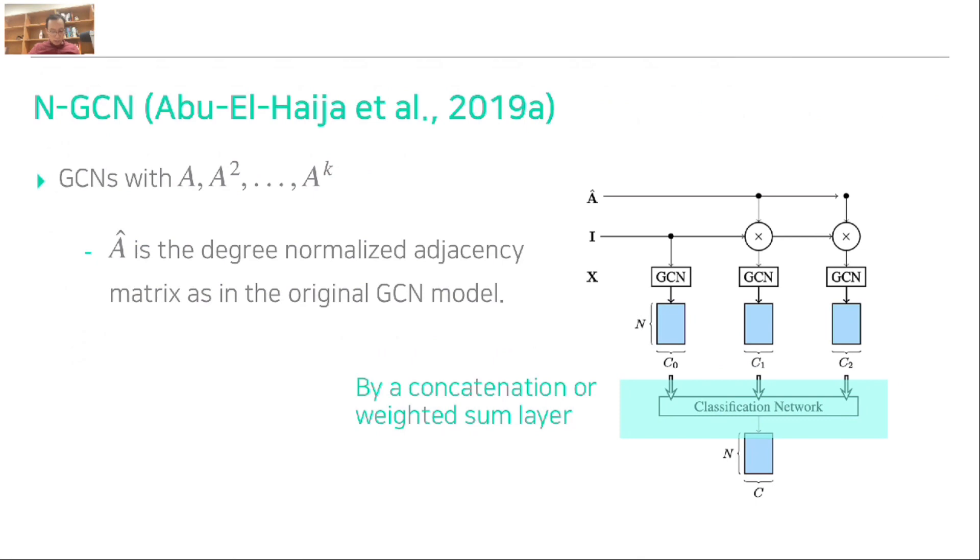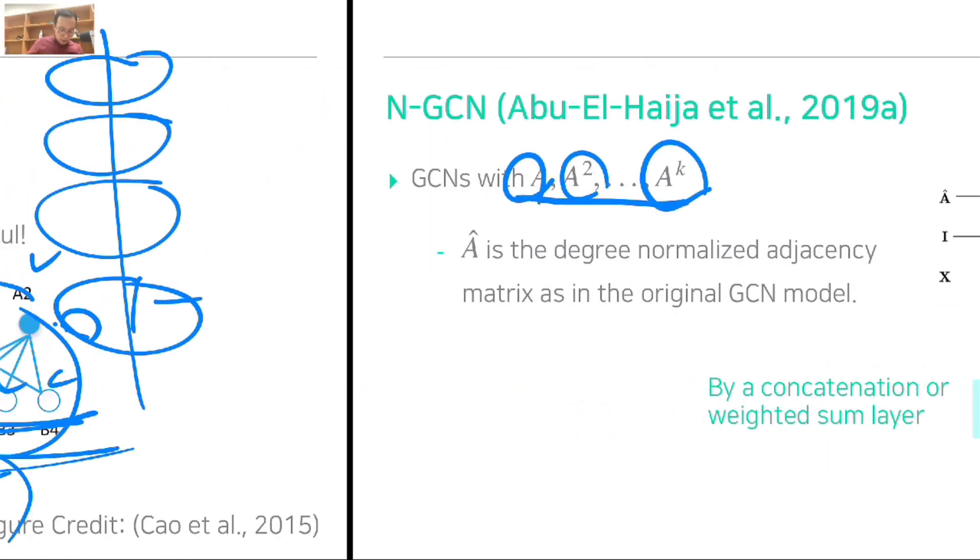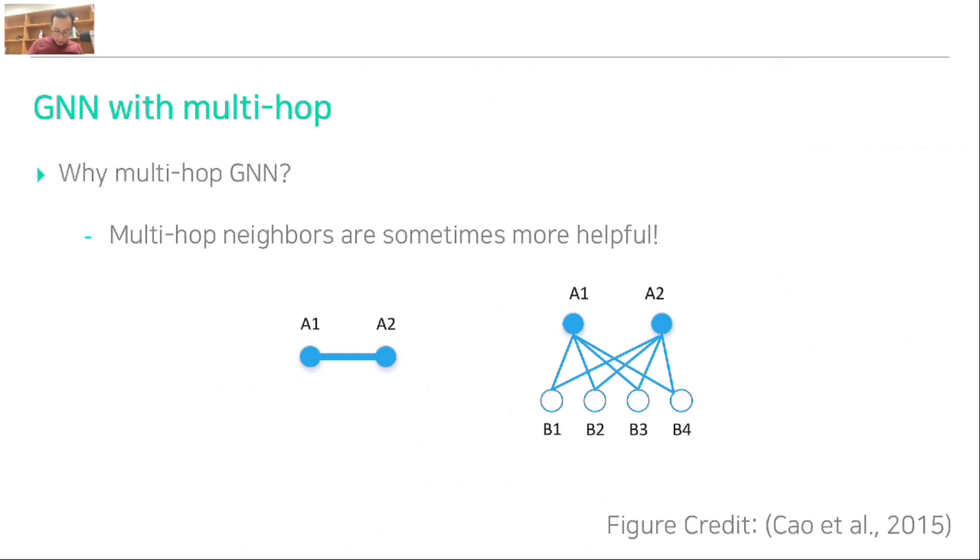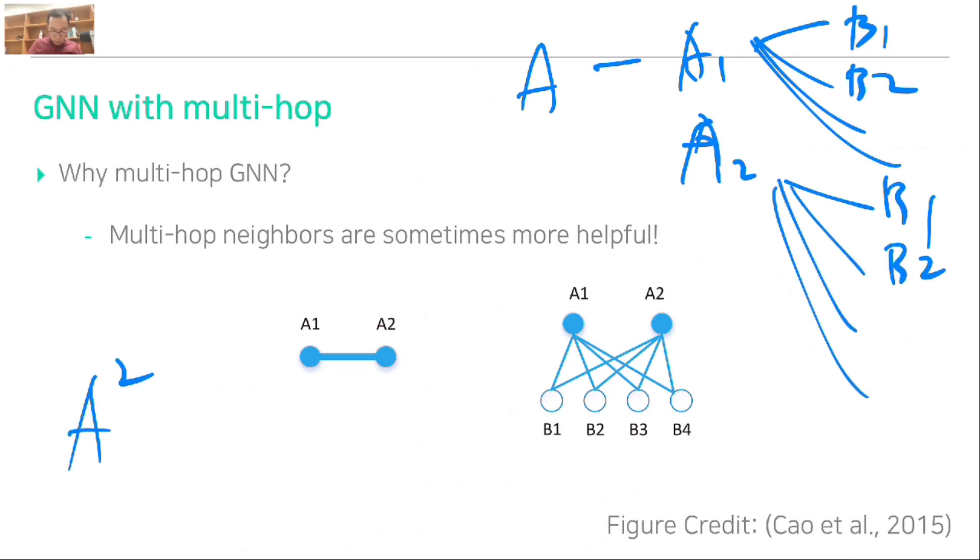NGCN addressed the problem. They proposed another GCN with different adjacency information. We have A, A-square, and A to the k information. Let me clarify. From A, we have A-square. For A1 and A2, we have B1, B2, B3, and B4. This is A.